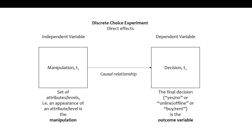The interesting thing is that a discrete choice experiment is an experiment, meaning there is a causal relationship. I show something at t1 — this happens first — and it has influence on your decision at t2. You may need a second or a minute to decide, but this decision happens after the manipulation. If the decision deviates depending on the manipulation, I can claim a causal relationship.